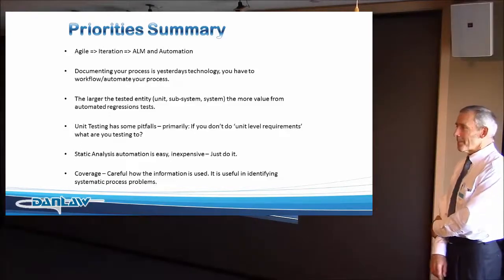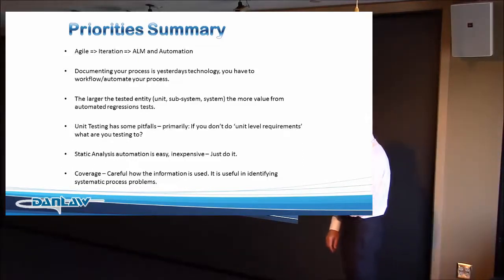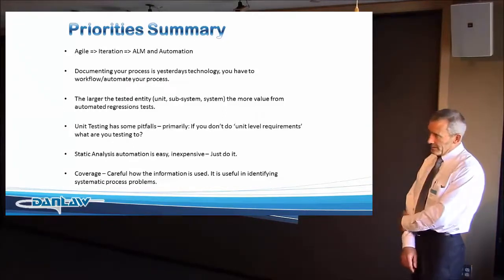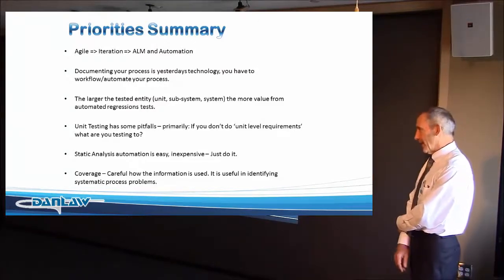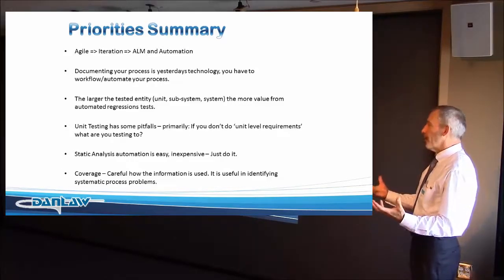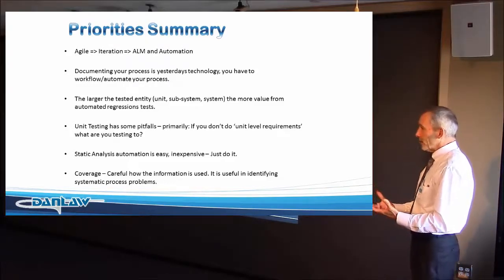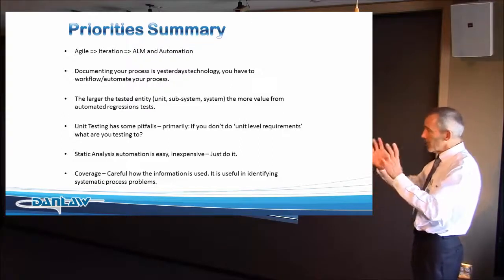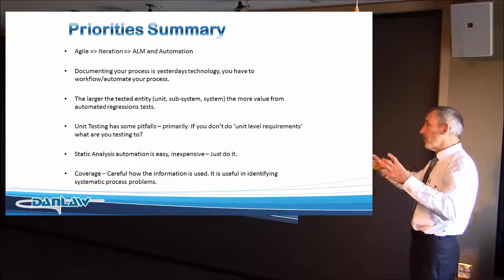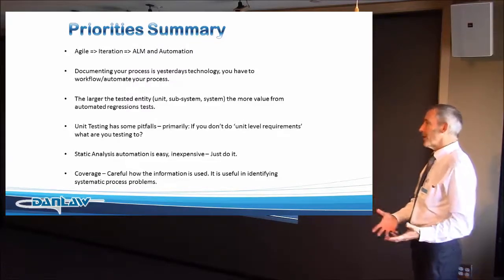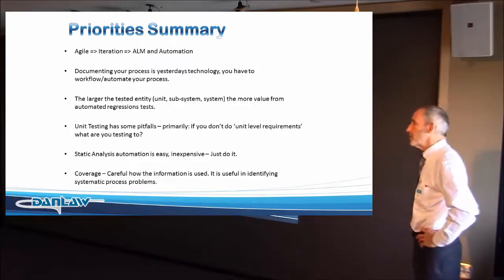Question: what about the integration test level? My view is there are two steps. One is taking things that have never worked together and integrating them — that's often a manual process because as soon as you put them together nothing works and you start debugging until they get working. But once they work as a system, we call that a subsystem and wrap it in test cases to verify it. So there's a manual phase to get from not-working to working, but once it's working we just consider it a subsystem and do testing there.